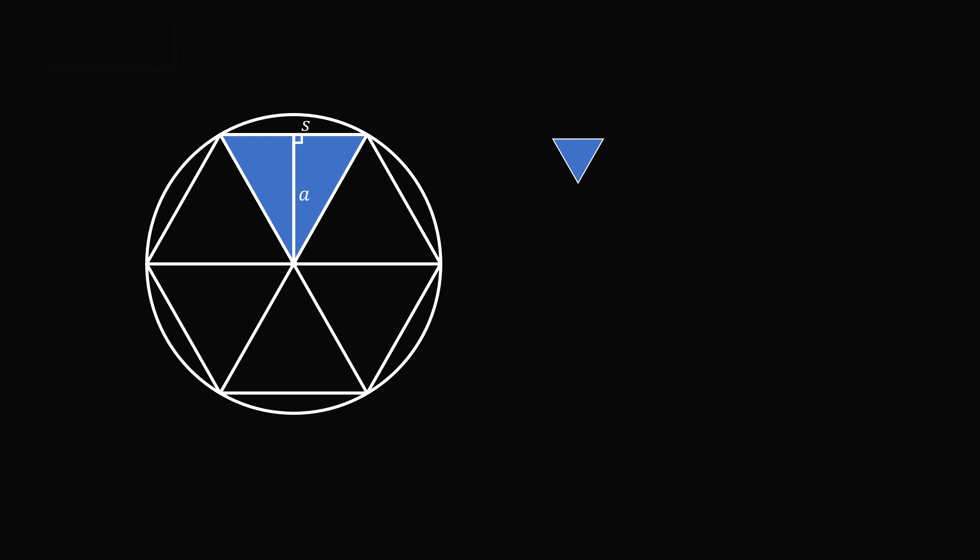So let's calculate the area of a single triangle. Its height will be equal to a length a, which we will call the apothem. This is the distance from the center of this inscribed regular hexagon to this side. So the area of this triangle will be equal to one half times its base s times the height a. So one half s a.